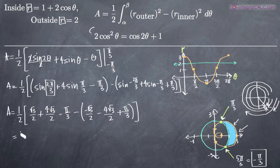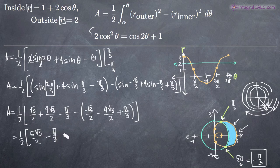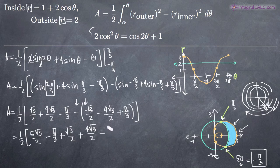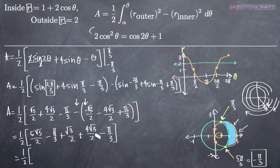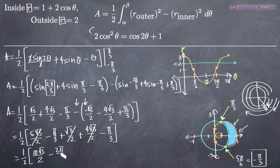Simplifying, we get one half times: square root of 3 over 2 plus 4 times square root of 3 over 2 equals 5 times square root of 3 over 2. The two negative signs cancel to give plus square root of 3 over 2 plus 4 times square root of 3 over 2. Combining all the square root of 3 over 2 terms gives 10 times square root of 3 over 2, minus 2 pi over 3.